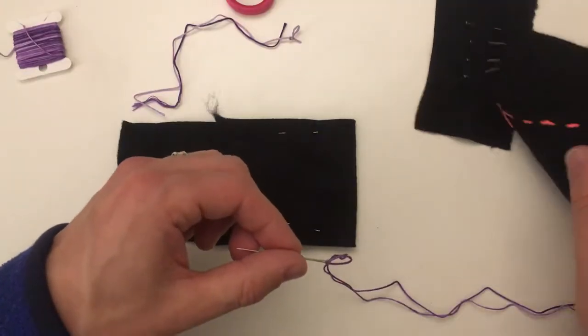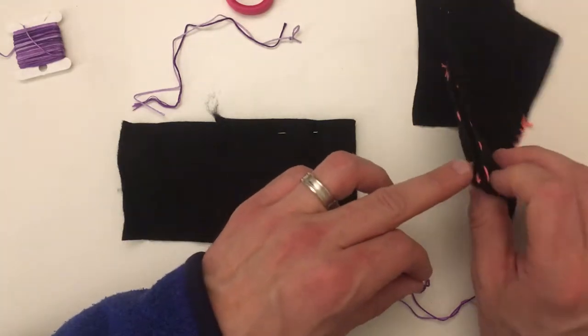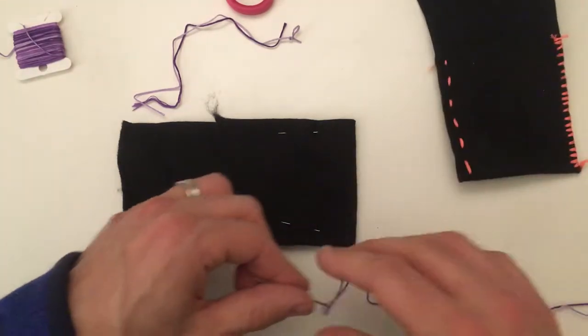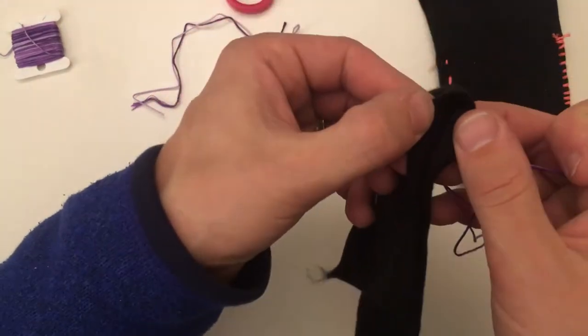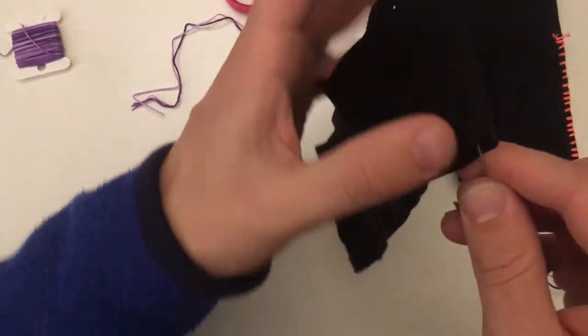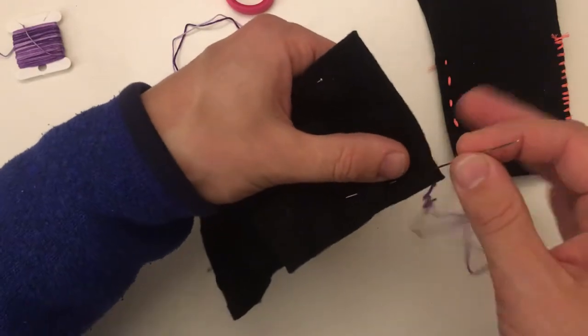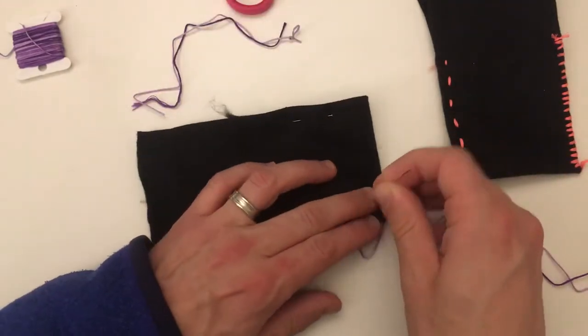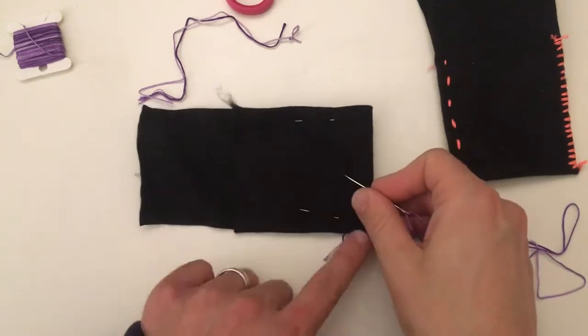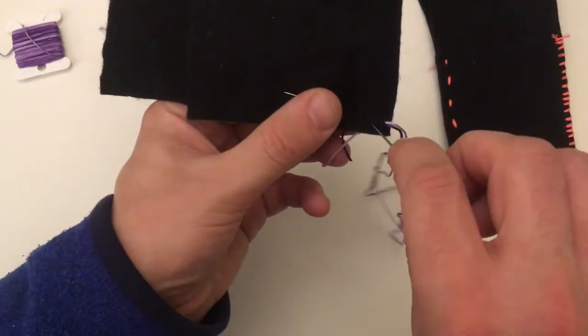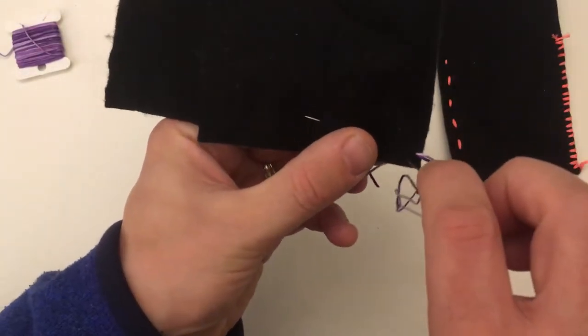Alright, so with this one you can see that I actually hid the knot on the inside. You want to start from the inside of your fabric. I'm going to do the straight stitch, and the straight stitch is basically like an under over line, almost like weaving.